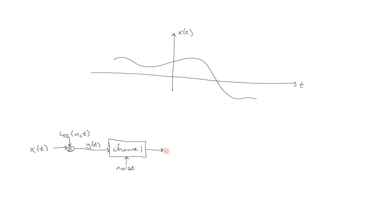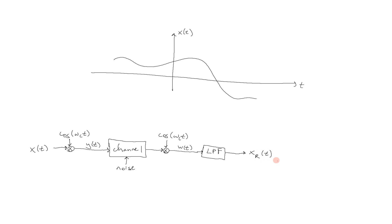At the receiving side, after it goes through the channel, we are again going to multiply by the same exact cosine as we used before. This will give us some signal — we'll call it w(t). Then that is going to go through a low-pass filter, and the output is going to be what we will term x_r(t), or our received signal. And this should, in theory, be the same exact thing as x(t). So this is the full amplitude modulation process.